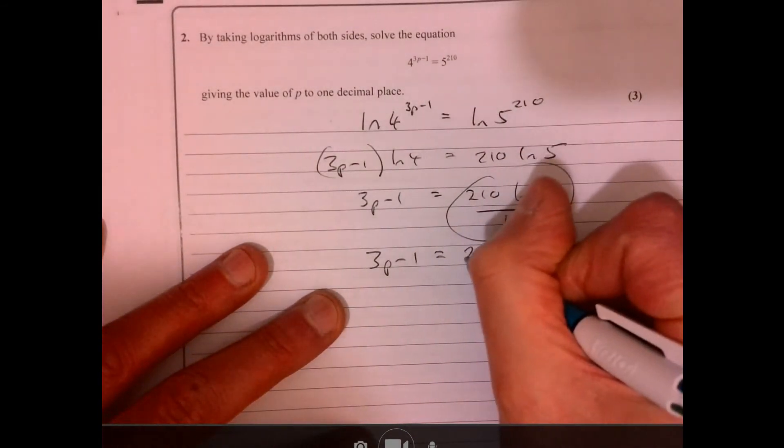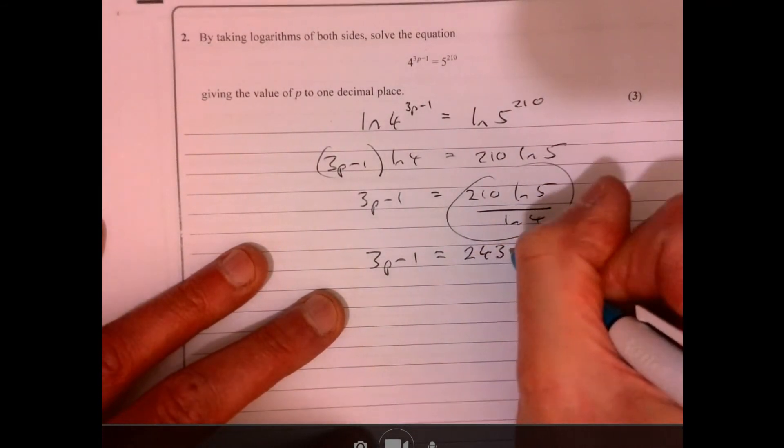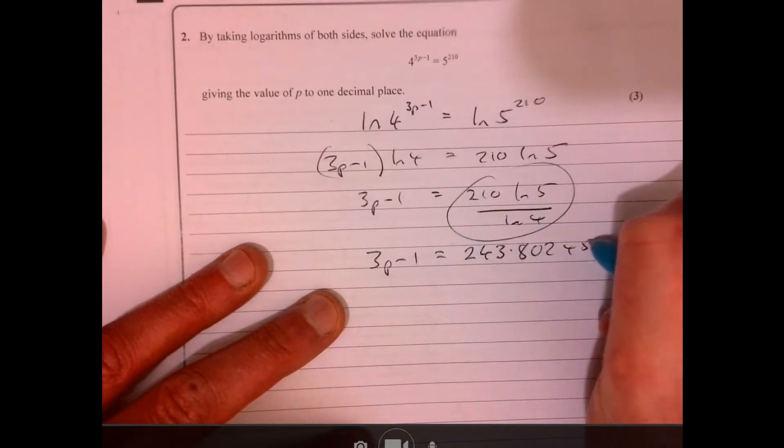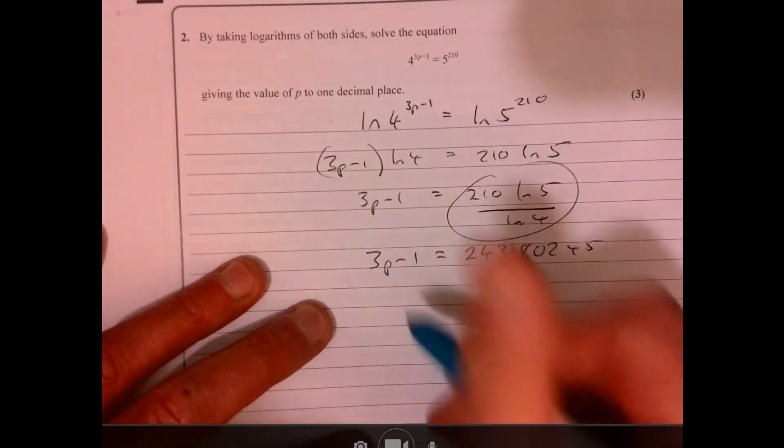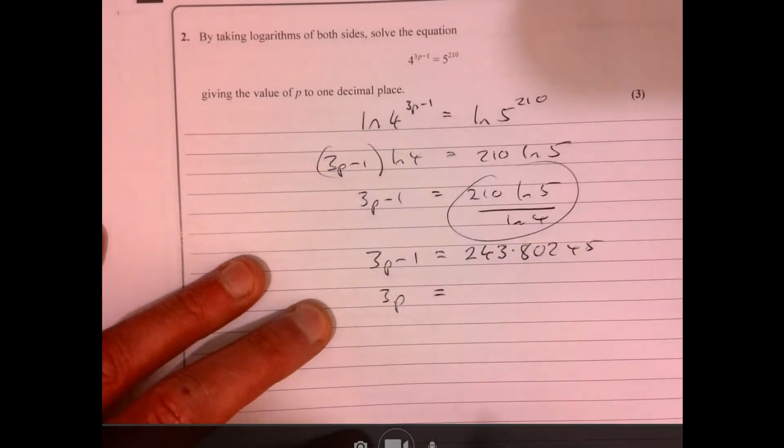If you do that, I'm using ln, remember you can use log there but you'll get the same thing. And add 1 to both sides so 3p, so just adding 1, so 244.8.